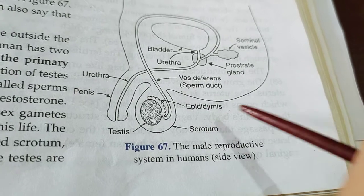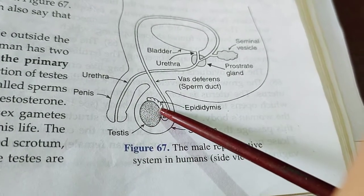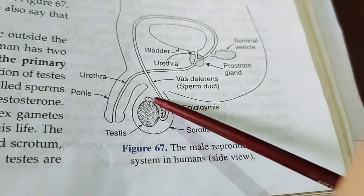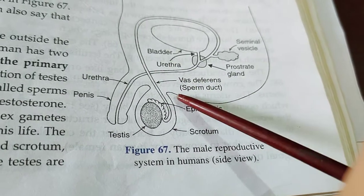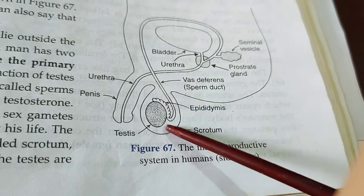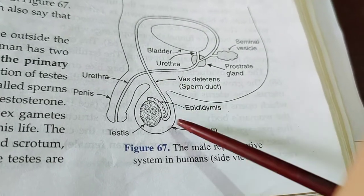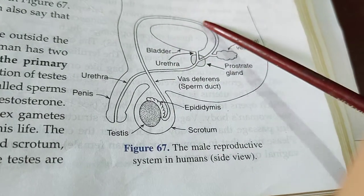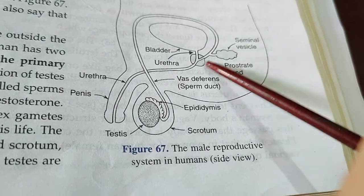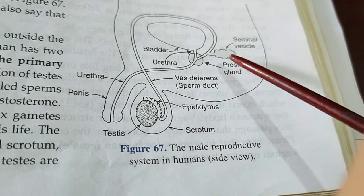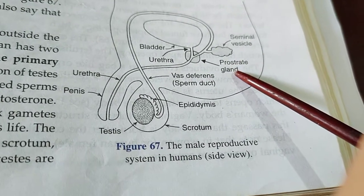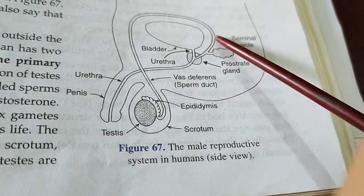The next parts are the coiled epididymis, which is followed by the vas deferens or sperm duct. The sperm duct is a very important tube-like structure which carries the sperm produced in the testes. The sperm duct passes through the abdominal cavity, and on the way there are certain other glands like the seminal vesicle and prostate gland, which add their secretions to the sperm duct.